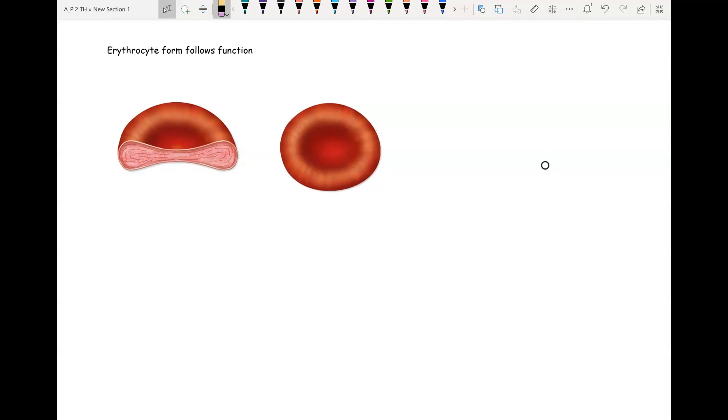We're going to begin our study of blood by looking at the red blood cell, also called the erythrocyte. These are very small cells with a biconcave disc shape.